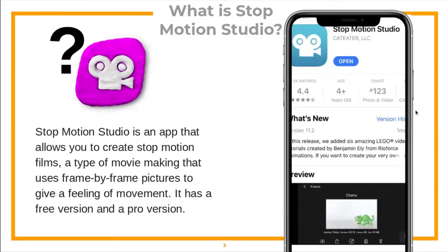Stop Motion Studio is an app that allows you to create stop-motion films, a type of movie making that uses frame-by-frame pictures to give a feeling of movement. It has a free version and a pro version.